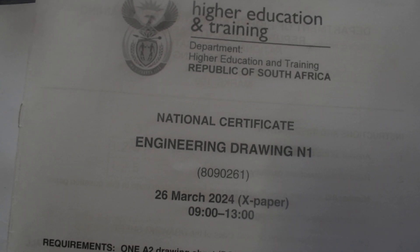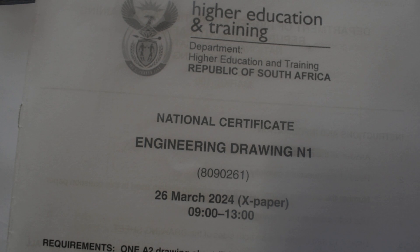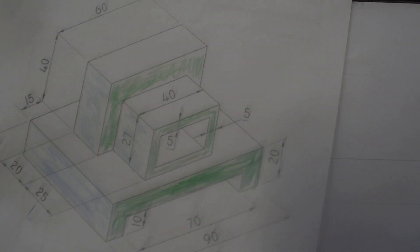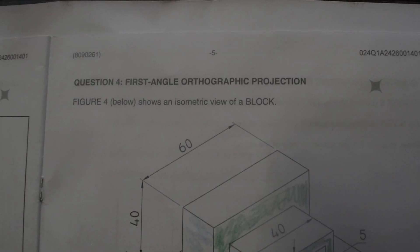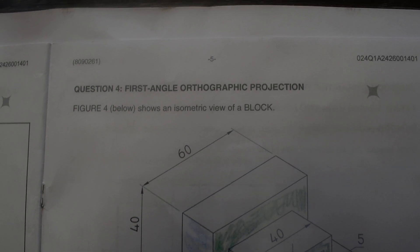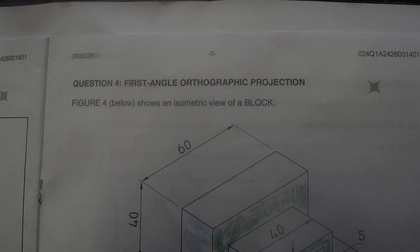Right guys, we meet again. Let us look at Engineering Drawing N1, this paper that was written on the 26th March 2024. I want us to look at Question 4 — we've done Question 3. So I want us to look at Question 4, which is first angle orthographic projection of Engineering Drawing N1.